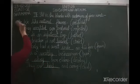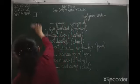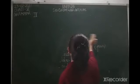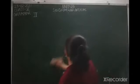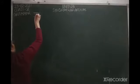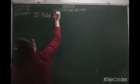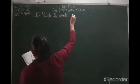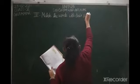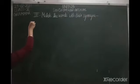Now I am going to erase and start with Exercise 3. In this exercise we need to match the words with their synonyms. The words on the left side are: lucky, happy, correct, huge, foolish, and buy.